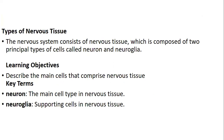Looking at the types of nervous tissue: the nervous system consists of nervous tissue composed of two principal types of cells, the neuron and the neuroglia. The main cell type in the nervous system is referred to as a neuron, as opposed to what is usually called a nerve, which is the main cell type in the peripheral nervous system. Neuroglia are the supporting cells of the nervous tissue.